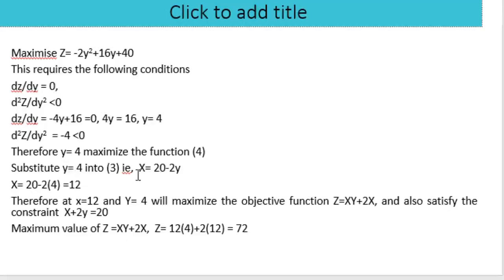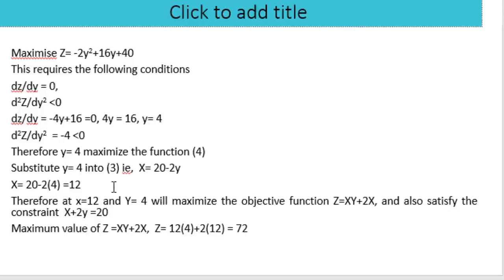Substituting y = 4 into x = 20 − 2y gives x = 20 − 2(4) = 12. Therefore, at x = 12 and y = 4, we maximize the objective function z = xy + 2x and also satisfy the constraint x + 2y = 20. The maximum value of z = xy + 2x = 72.